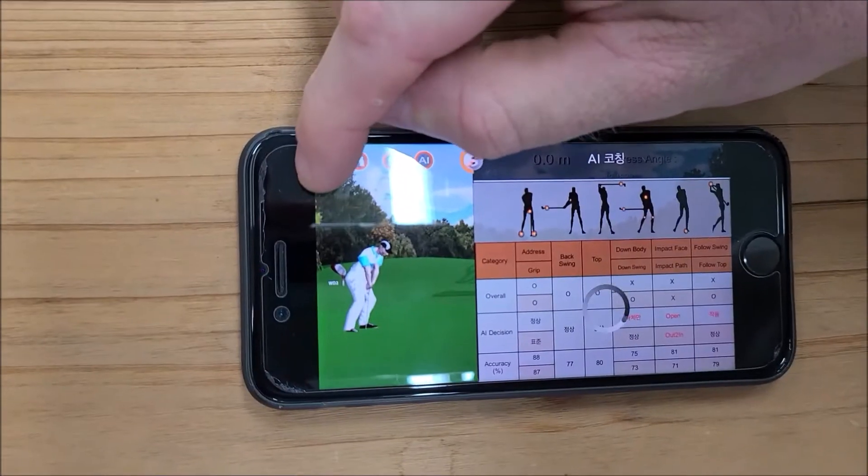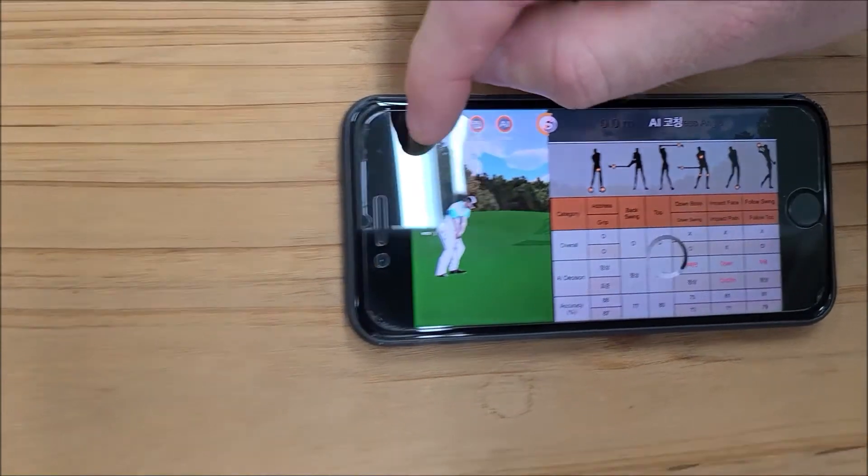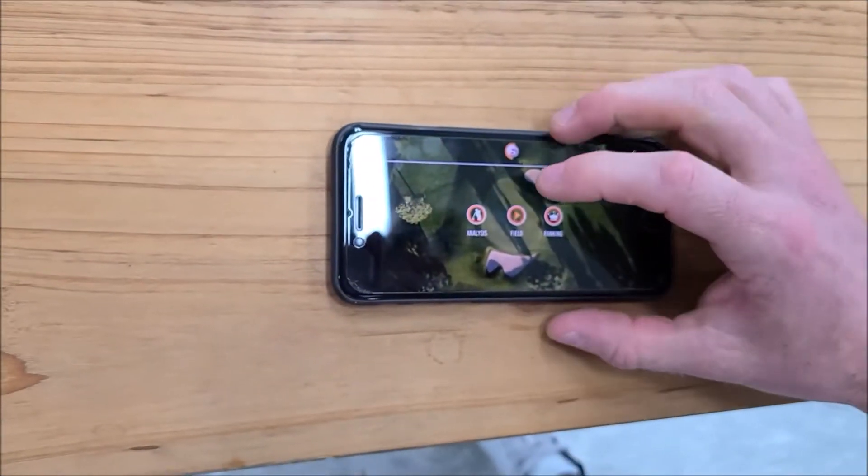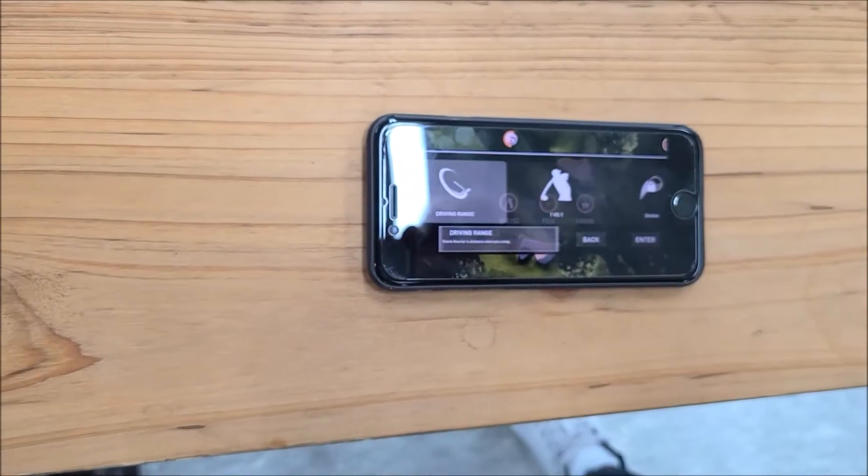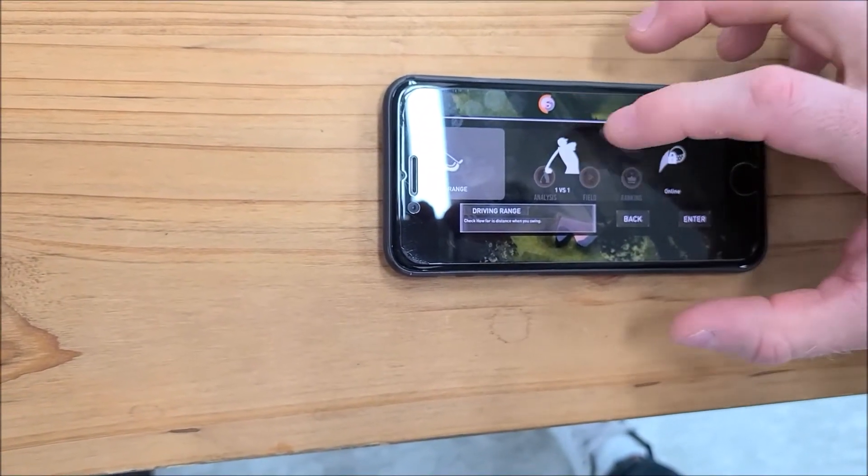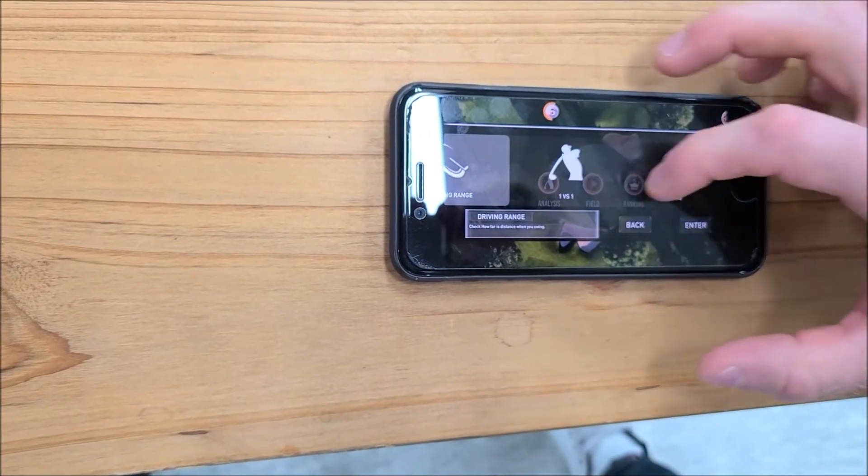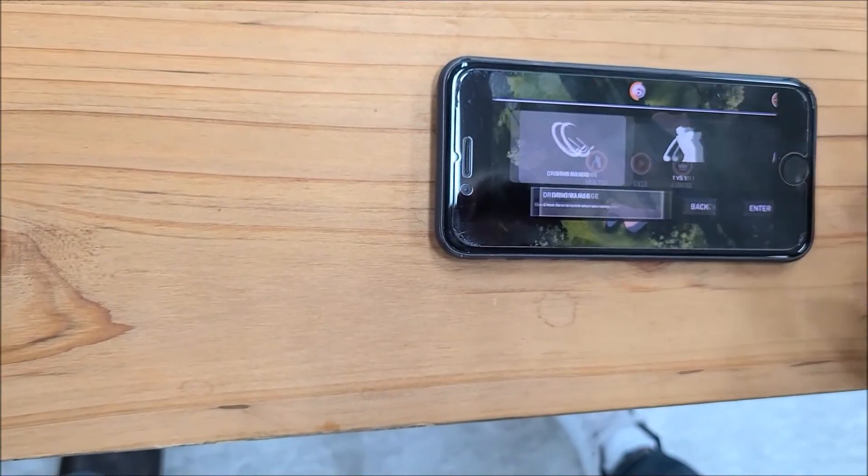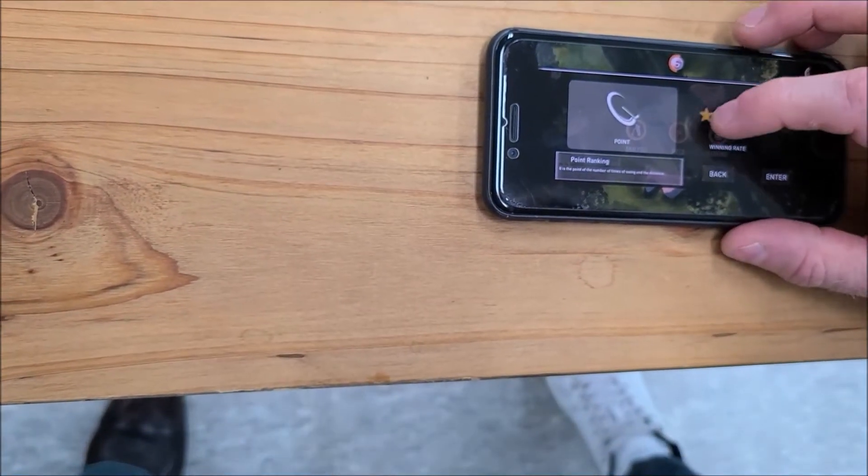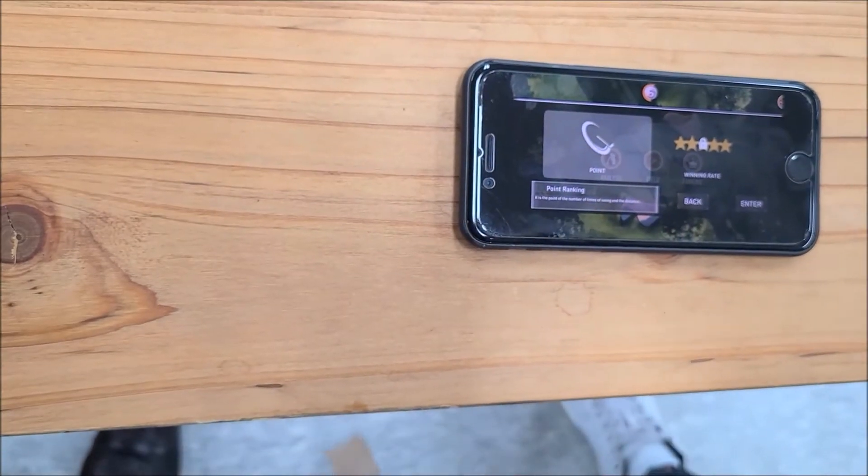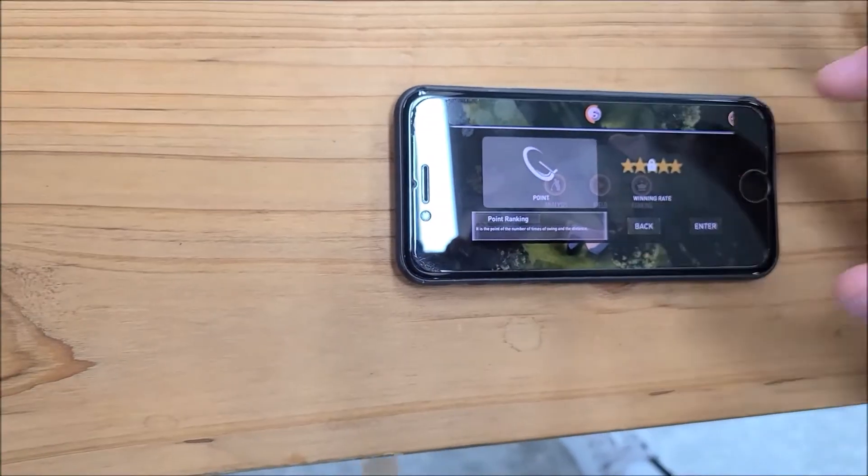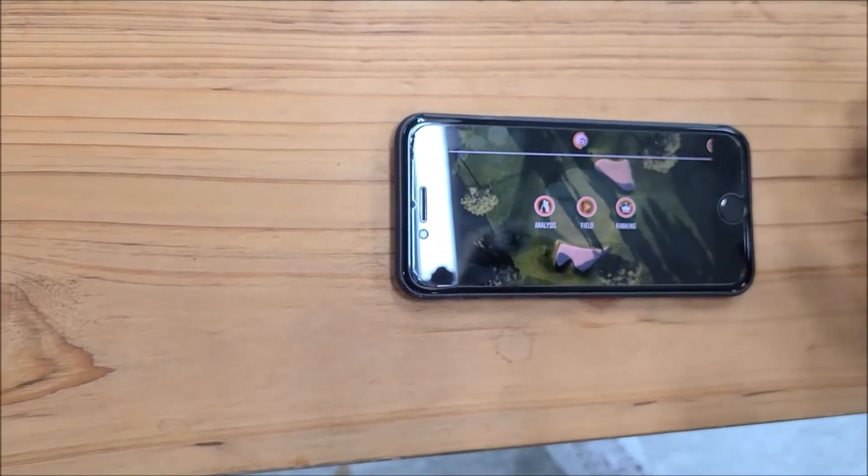Going back to the home page, we have the Field mode where you can play on the driving range, play against another player, or actually play on the course. Another thing we have is the Rankings, where we can link up and play against other players that also have the smart club and are part of the Smart Golf system.